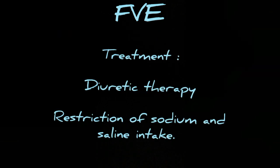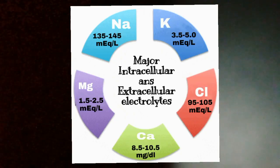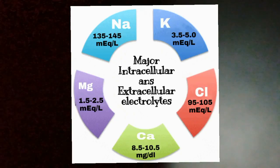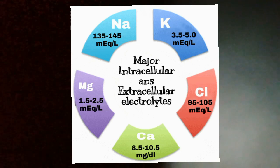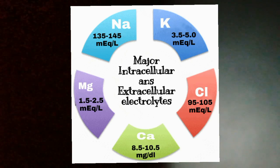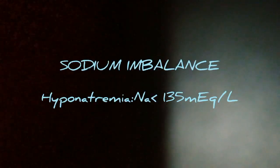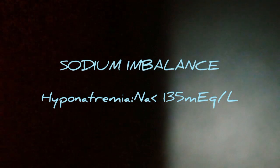We can treat hypervolemia by diuretic therapy and restriction of sodium and saline intake. These are some of the major intracellular and extracellular electrolytes and their normal ranges: Sodium 135–145 mEq/L, Potassium 3.5–5.0 mEq/L, Chloride 95–105 mEq/L, Calcium 8.5–10.5 mg/dL, and Magnesium 1.5–2.5 mEq/L.